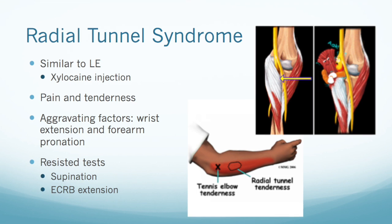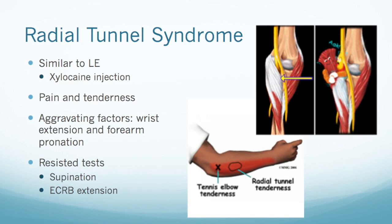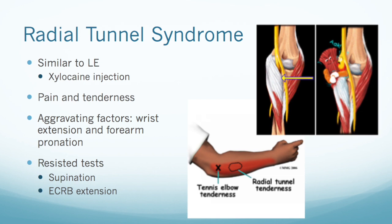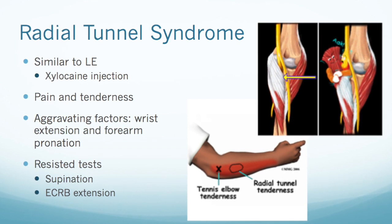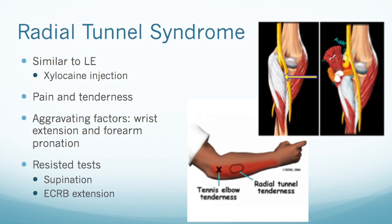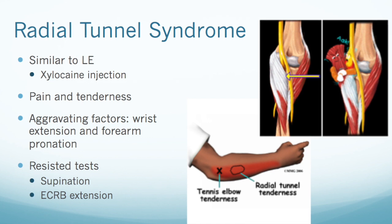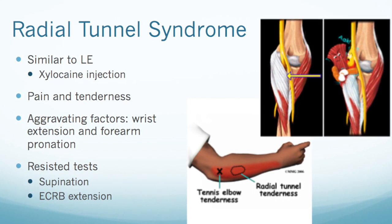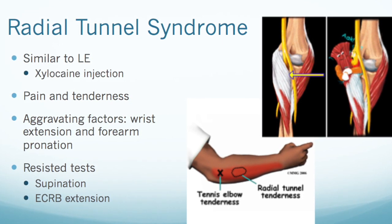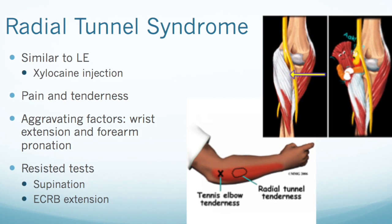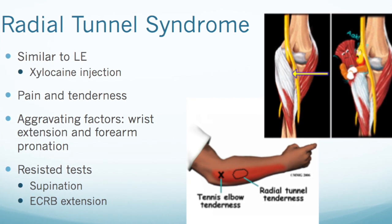The second condition is radial tunnel syndrome. This can present very similarly to lateral epicondylalgia with pain and tenderness in a similar area, but with radial tunnel syndrome the pain is mainly over the anterolateral forearm in the area of the supinator muscle and the radial neck. The tenderness is about four finger widths below the lateral epicondyle, which differentiates it from lateral epicondylalgia where tenderness is right on the epicondyle. A way to differentiate between the two is to use a xylocaine injection, a mixture of lidocaine and cortisone. If the symptoms are relieved with the injection, it is indicative of lateral epicondylalgia, but if the symptoms persist, then it is indicative of radial tunnel syndrome.